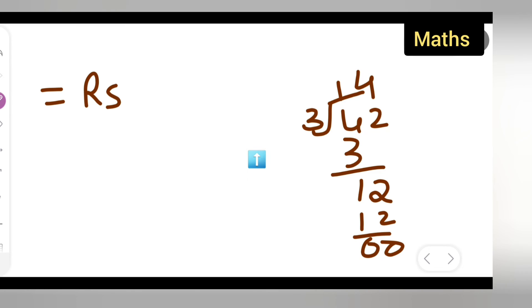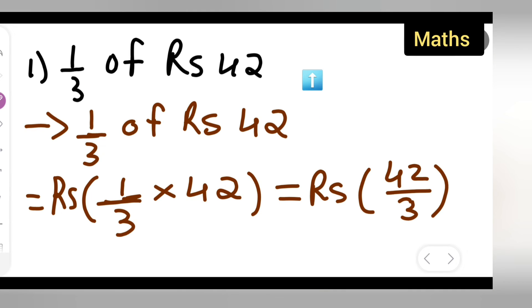So basically you can write down rupees, 42 divided by 3 is nothing but rupees 14. If you want, you can cancel this part: rupees 42 upon 3 means 3 ones are 3, 3 fourteens are...